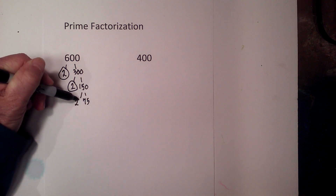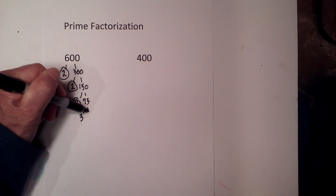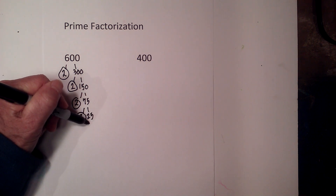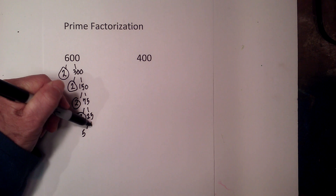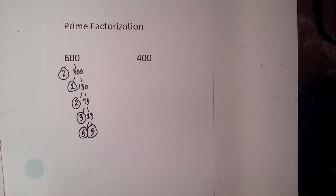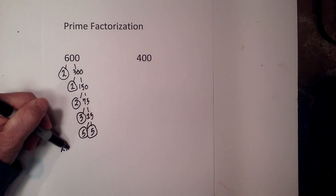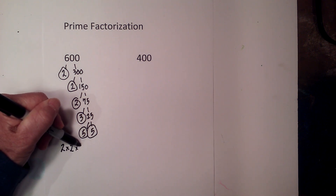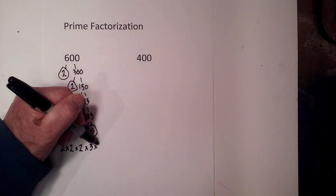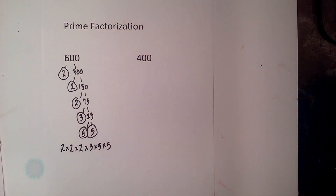Getting close: 3 times 25 — circle the 3 because it is prime. And finally 5 times 5 — now we're down to just prime numbers. So the prime factorization of 600 is 2 times 2 times 2 times 3 times 5 times 5.